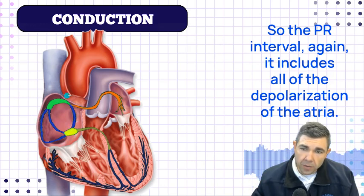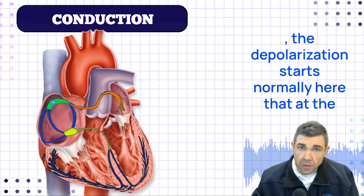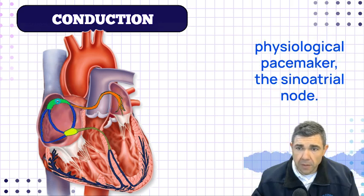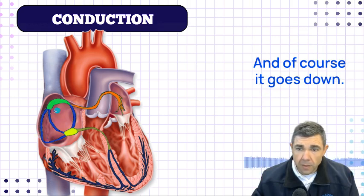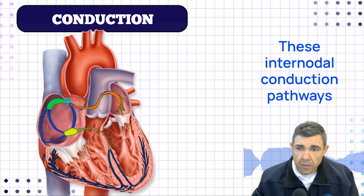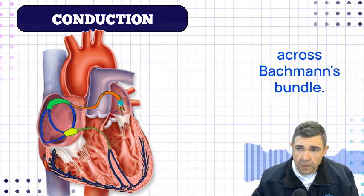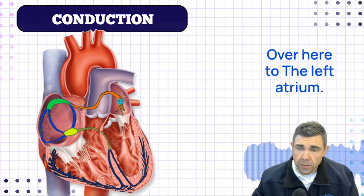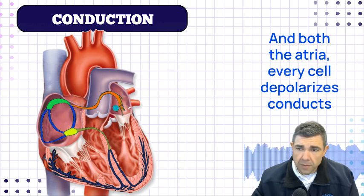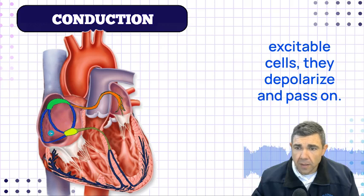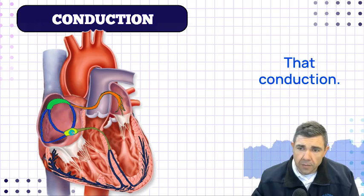The PR interval includes all of the depolarization of the atria. Depolarization starts normally at the physiological pacemaker, the sinoatrial node, and goes down the internodal conduction pathways across Bachmann's bundle to the left atrium. Both atria depolarize — every cell depolarizes, conducts, and passes on that excitation.